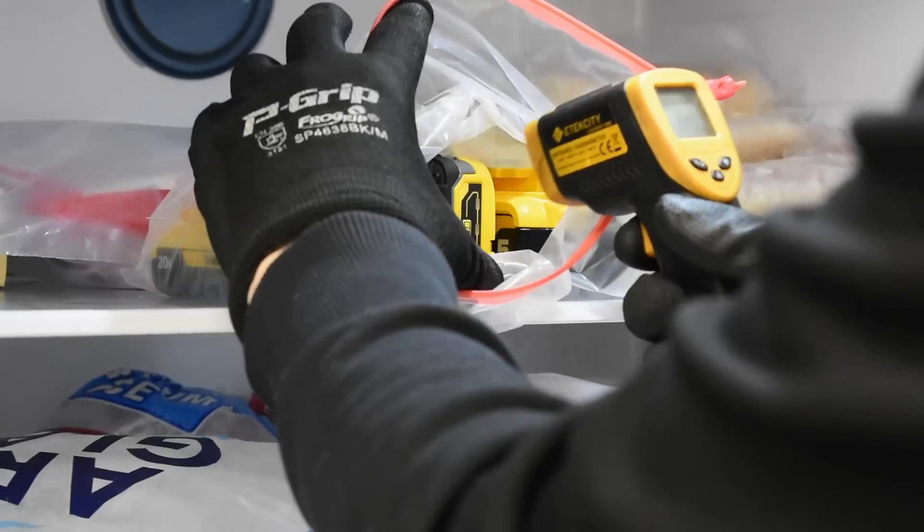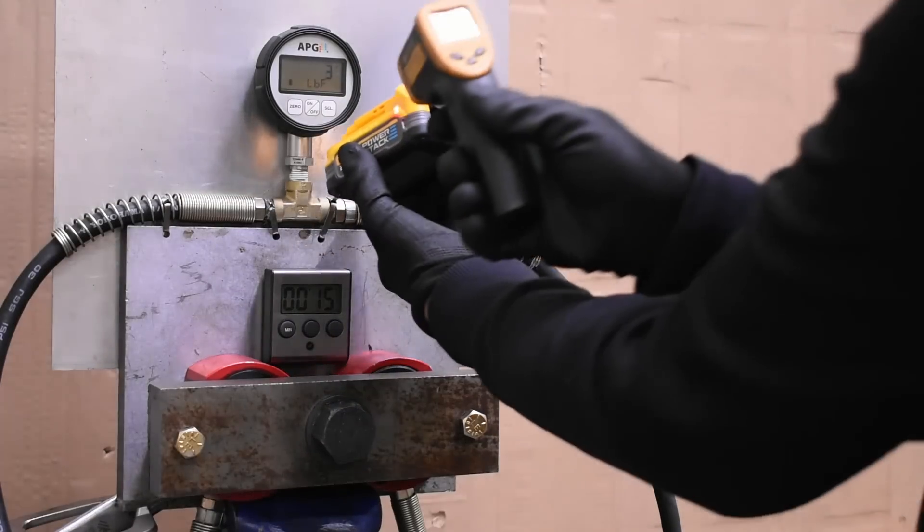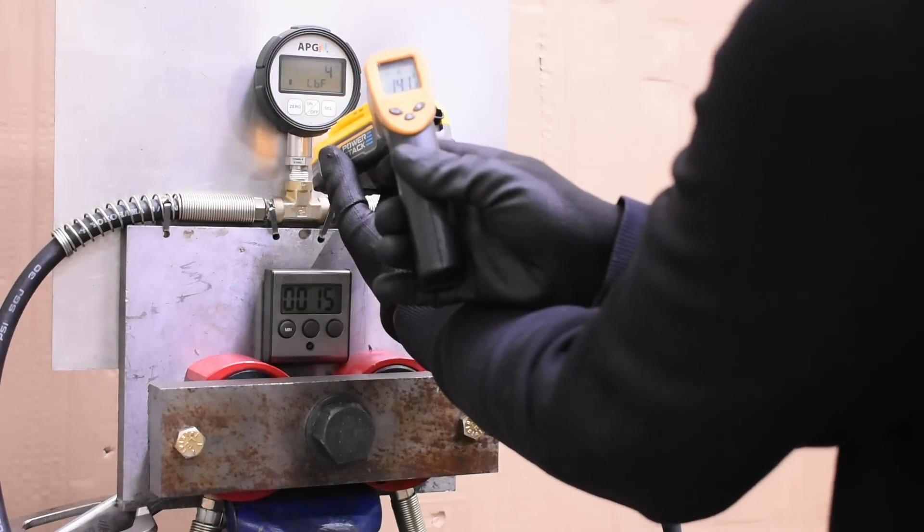And with DeWalt now having three different battery cell types - 18650s, 21700s, and lithium pouch now - you want to see what's what.